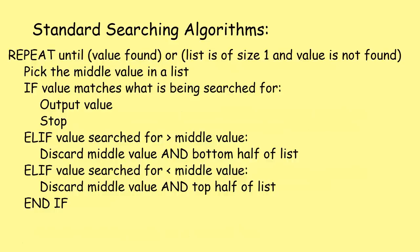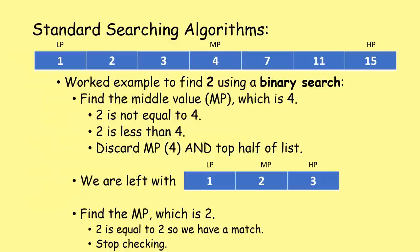A binary search is very efficient - you could find a specific value in a list of one million numbers in a maximum of 21 comparisons. But it will only work on a sorted list and it's a bit more difficult to program. We start with an ordered list and need to find the value two.